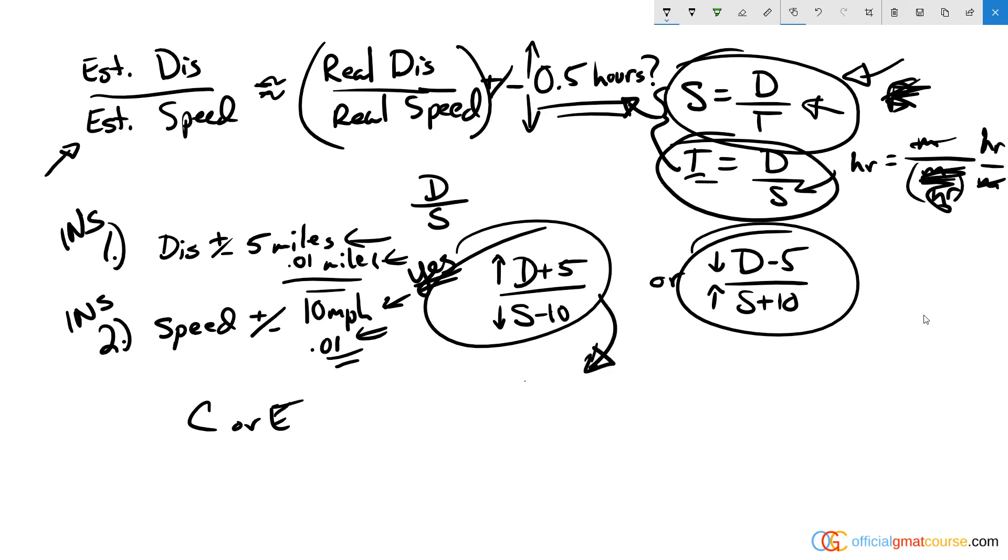Looking at the first option, if you make the distance really small and the speed really small, then these numbers will have a larger impact on the ratio. So I'm going to make the distance one mile at 11 miles per hour, and that would be 1 over 11 hours.